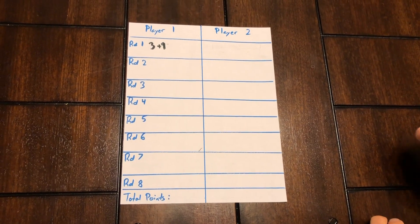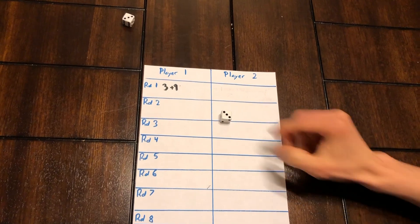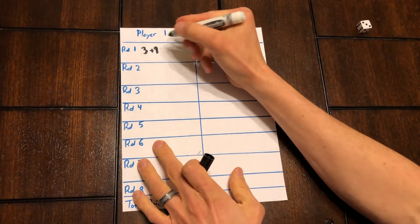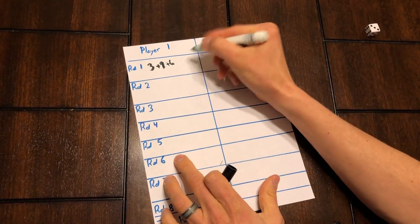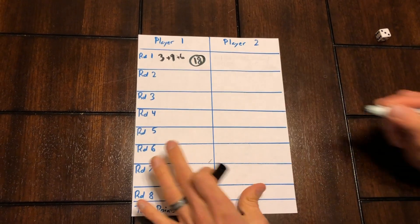I'm going to play another one here just to see if I can rack up a couple more points. I roll and I get a three and a three, which gives me six. So together, three plus nine plus six is eighteen, and I'm feeling pretty good about that, so I'm going to go ahead and save my eighteen points.